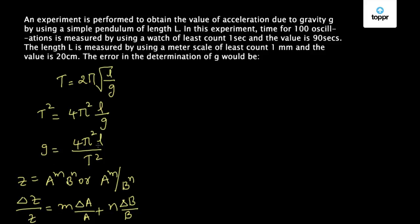Using this for the expression g, we have Δg by g equals Δl by l plus 2 Δt by t. Using the same expression, 4π² is constant and we have l by t², l power 1 by t square, so this is the formula.